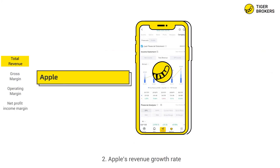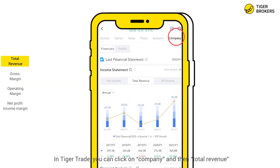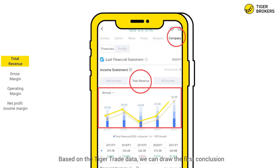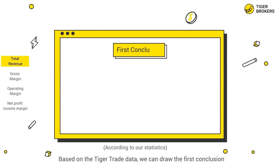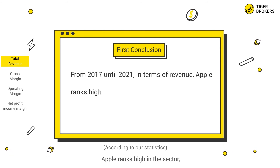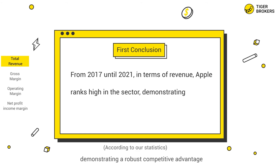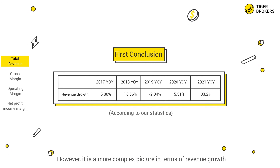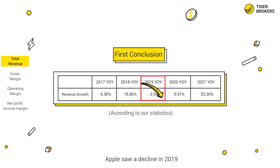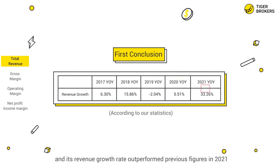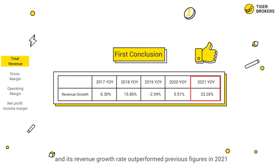For Apple's revenue growth rate, in Tiger Trade you can click on company and then total revenue to access the revenue column, which shows the revenue growth rate. From 2017 to 2021, Apple ranks high in the sector in terms of revenue, demonstrating a robust competitive advantage. However, in terms of revenue growth it's a more complex picture — Apple saw a decline in 2019, but a return to positive growth in 2020, and its revenue growth rate outperformed previous figures in 2021.